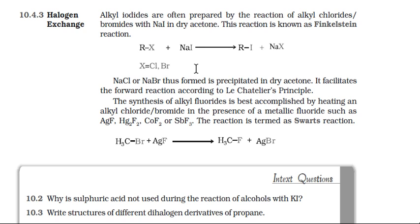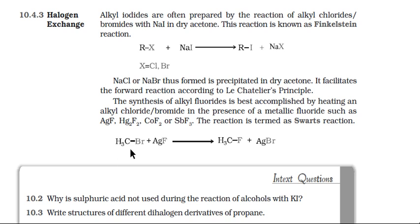The important thing is that the reaction takes place in the presence of dry acetone. Why dry acetone? Because in the presence of dry acetone, the byproduct NaCl or NaBr precipitates out, and this allows the reaction to proceed in the forward direction according to Le Chatelier's principle.